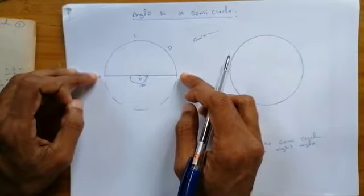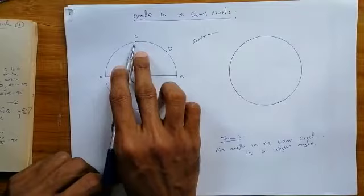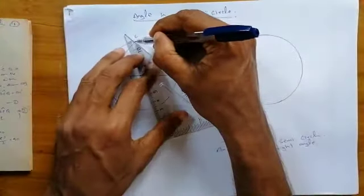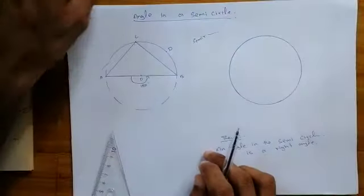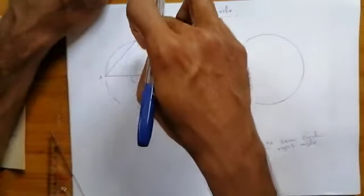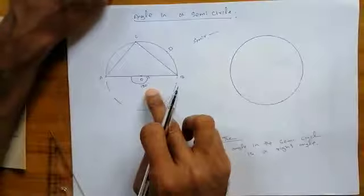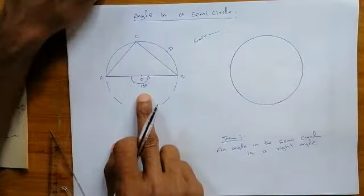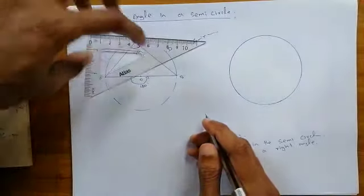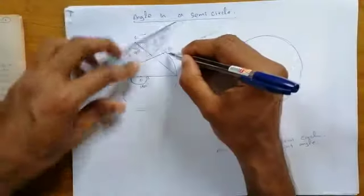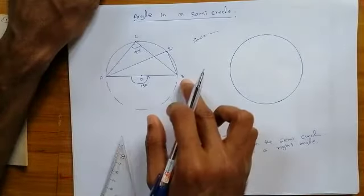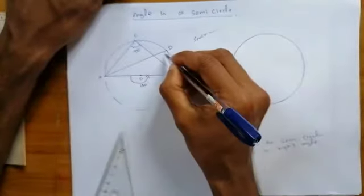If you consider the AB semi-circle, what is the magnitude of the angle subtended at the remaining part? I mark point C and point D here. If you connect the ending points of the AB semi-circular arc to the remaining part of the circle, related to the first theory — angle on the circumference is twice the angle at the center — the angle at the center is 180 degrees because the diameter is 180. So the angle should be 90 degrees.